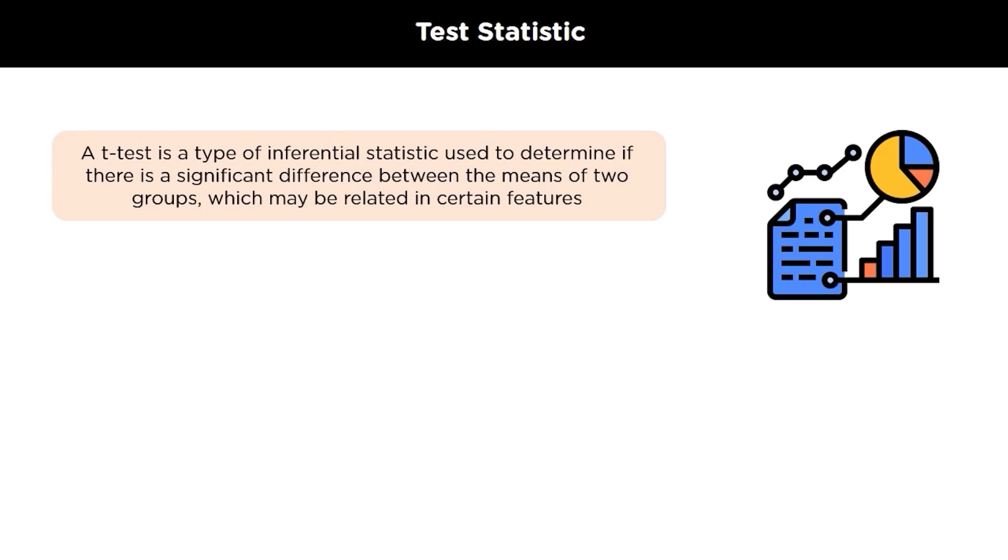Now let's move on to z-tests. Z-tests are a statistical way of testing a hypothesis when either we know the population variance or we don't know the population variance but our sample size is greater than 30. We perform the z-test when we want to compare a sample mean with the population mean.